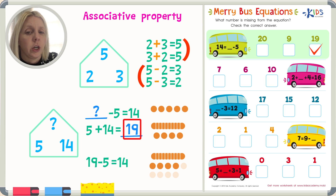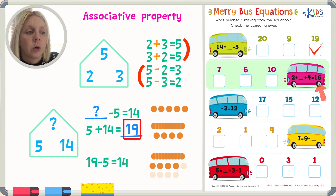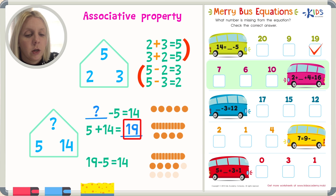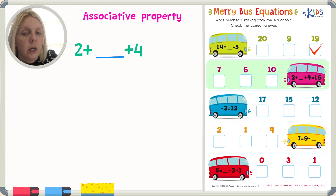That's how we solve using associative property — knowing that three numbers always go together. Now we've got a really tricky one because we've got four numbers. It looks like it won't use the associative property, but I'll show you what we do. I'm going to write it out: two plus something — I don't know what that something is — plus four equals sixteen.